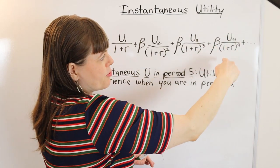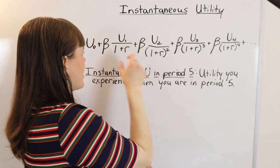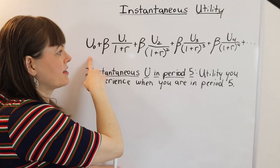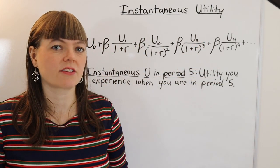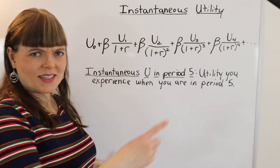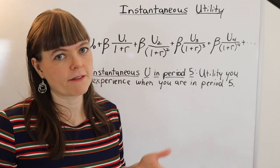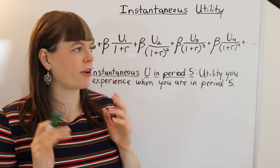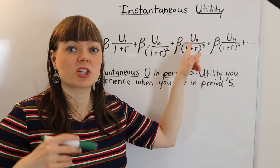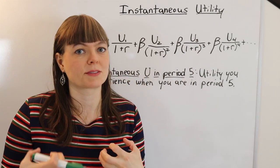which we're discounting appropriately so that it matches the units of period zero. We're putting all of these in the same time units to handle them well. So instantaneous utility itself is a fairly straightforward concept. It's just from a specific time period, and that is the period in which that utility is actually experienced.